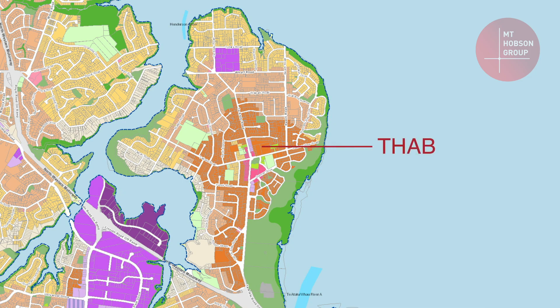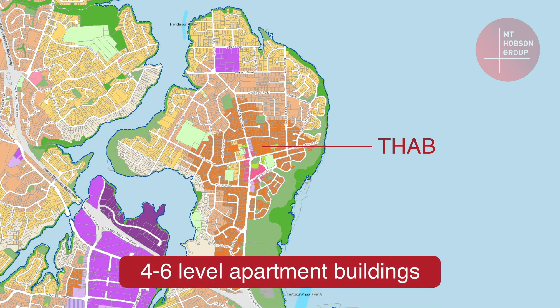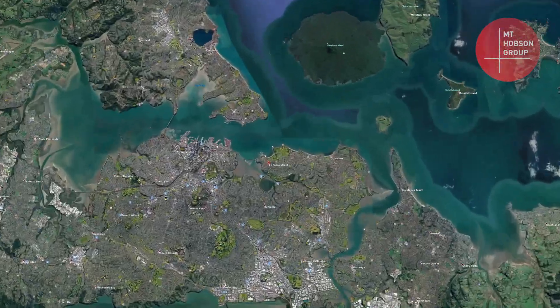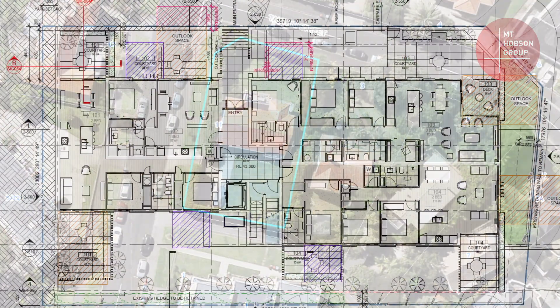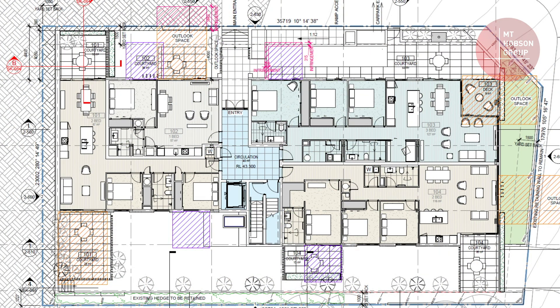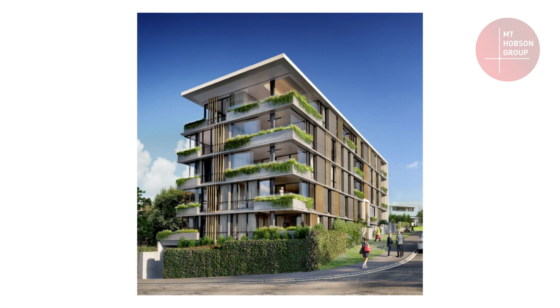The third zone is the Terrace House and Apartment Zone, coloured orange on the Unitary Plan maps. It allows for four to six level apartment buildings, usually located around shopping or employment areas. This is the zone with the most intense redevelopment potential and where we're going to see the most significant change to suburban form. An example is 11 Paiora Street, Ōrākei, where Mount Hobson Group obtained resource consent for a five-level plus basement apartment building on a site of 900 square metres, previously occupied by a single-level dwelling.